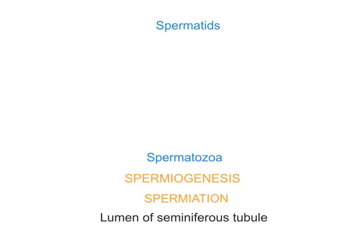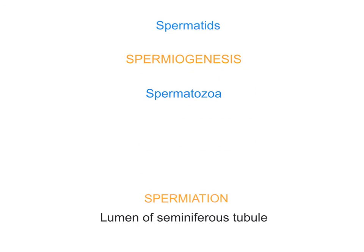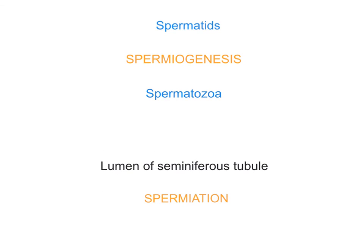The spermatids created through spermatogenesis still have to undergo morphological changes and metamorphosis, and this creates the actual sperm cells known as spermatozoa. This process is known as spermiogenesis, not spermatogenesis. The spermatozoa are then released into the lumen of the seminiferous tubules through a process known as spermiation.